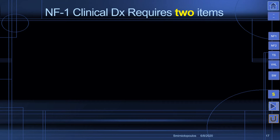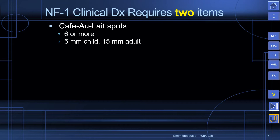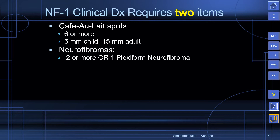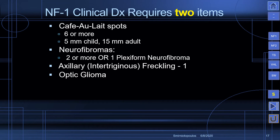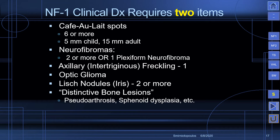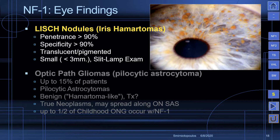The NF1 clinical diagnosis criteria from the NIH requires two items from this list: café au lait spots — six or more, 5mm in a child and 15mm in diameter in an adult (size criteria distinguish them from actinic freckles); two or more neurofibromas, or one complex plexiform neurofibroma; axillary or other skinfold freckling; optic pathway gliomas; Lisch nodules — named, as you know, after Dr. Nodule; any one of a number of distinctive bone lesions including pseudoarthrosis and sphenoid dysplasia; and a first-degree relative known to have the same disorder.